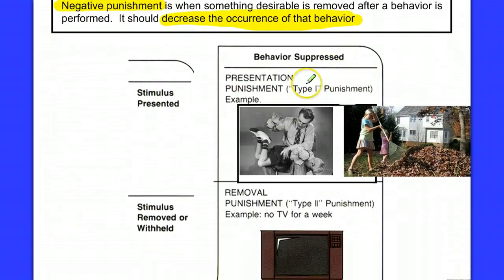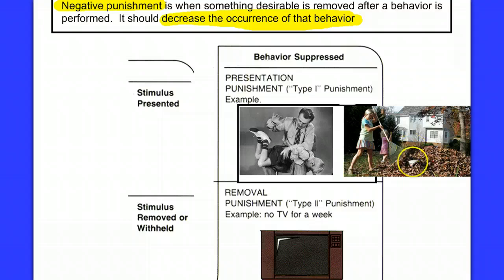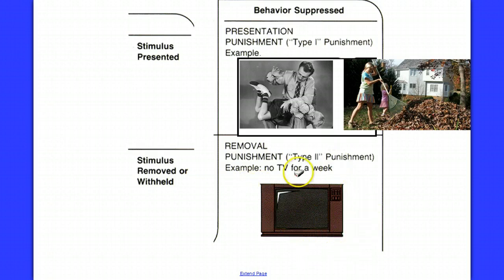Here are examples of positive punishment: a child misbehaves and receives a spanking — that's positive punishment, he's being given something aversive. Or the girls misbehave and have to rake leaves in the yard — they're given chores. And if we misbehave and the punishment is no TV for a week, that's negative punishment — the removal of something desirable.